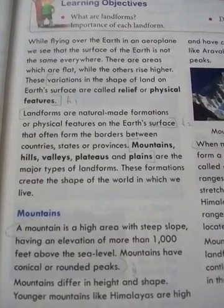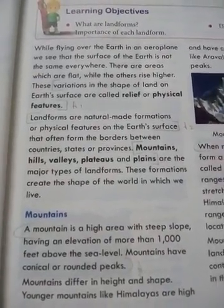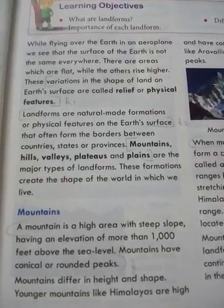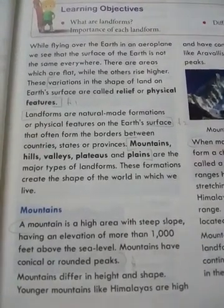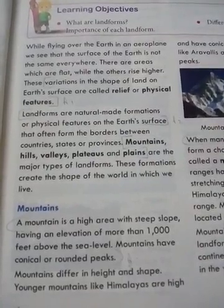Good morning students, welcome to online class for Class 5th. Today we are going to start our new chapter on major landforms. Flying over the earth in an airplane, we see that the surface of the earth is not the same everywhere. There are areas which are flat while others rise higher. These variations in the shape of land and earth's surface are called relief and physical features.